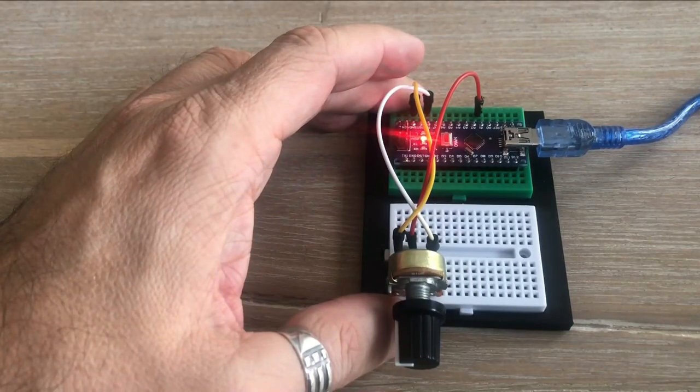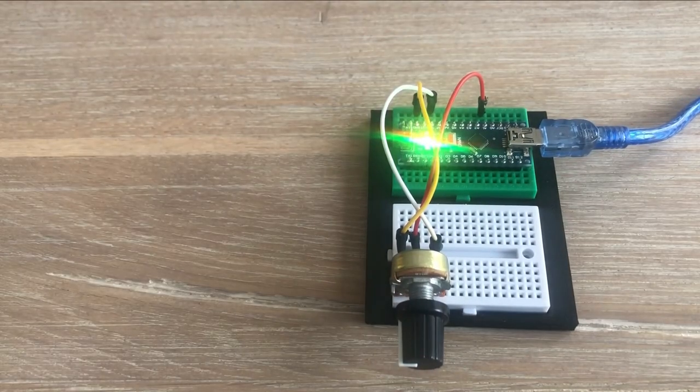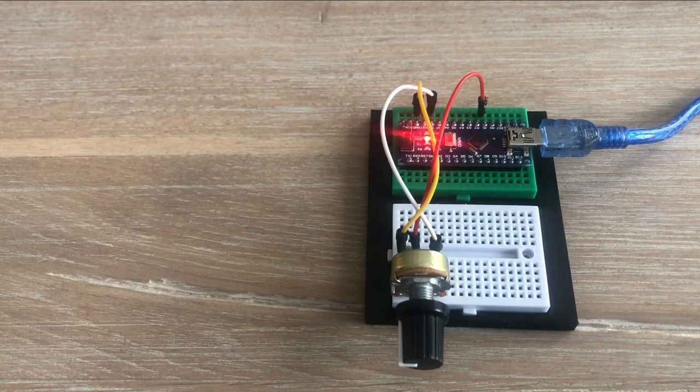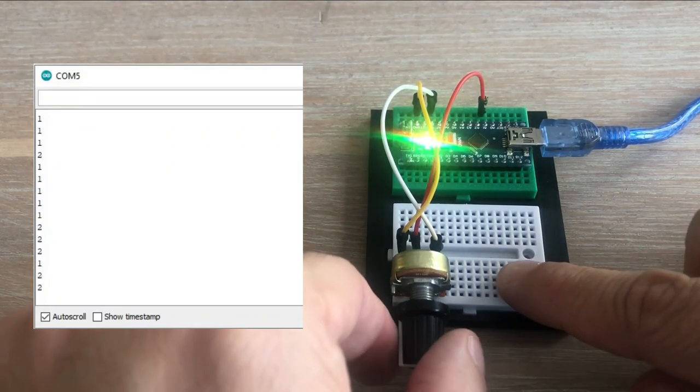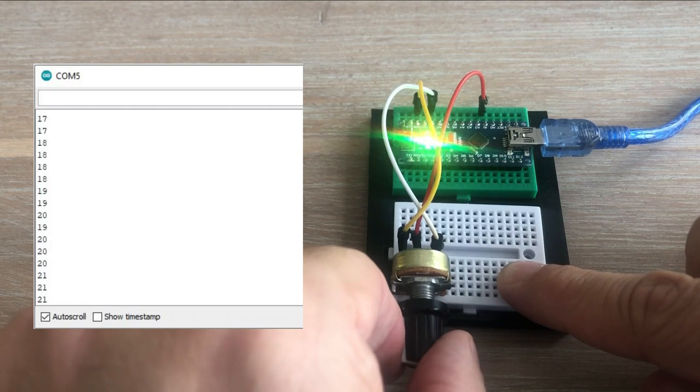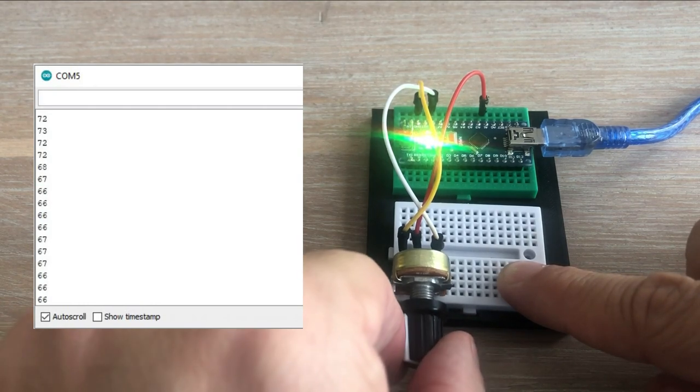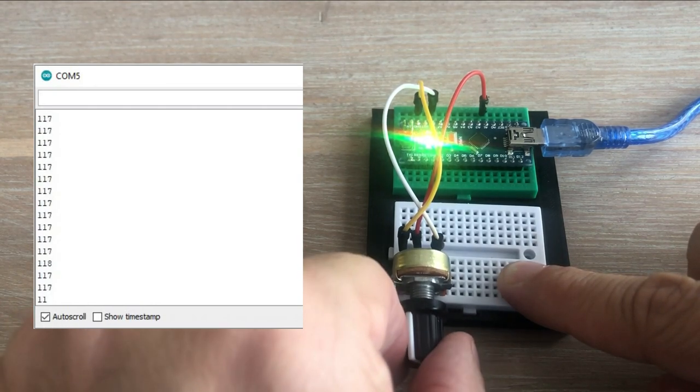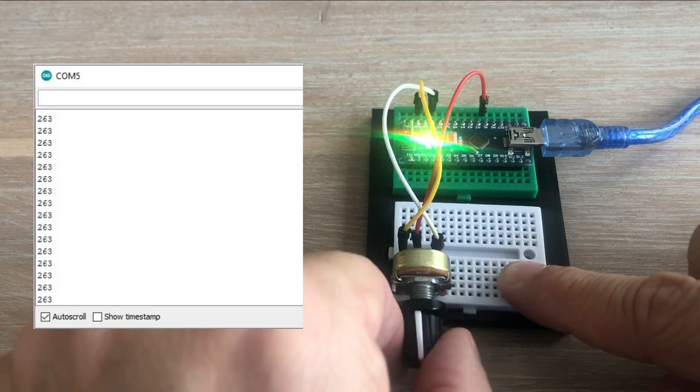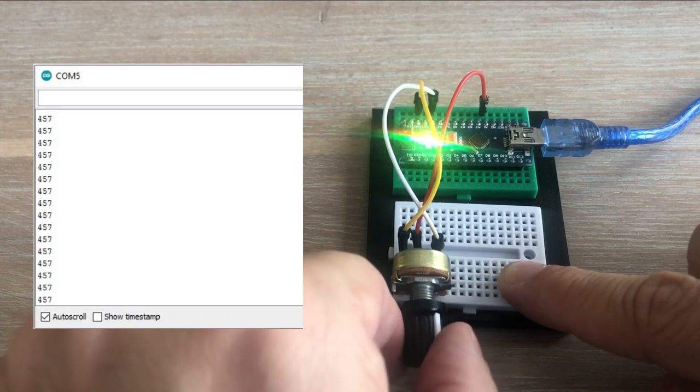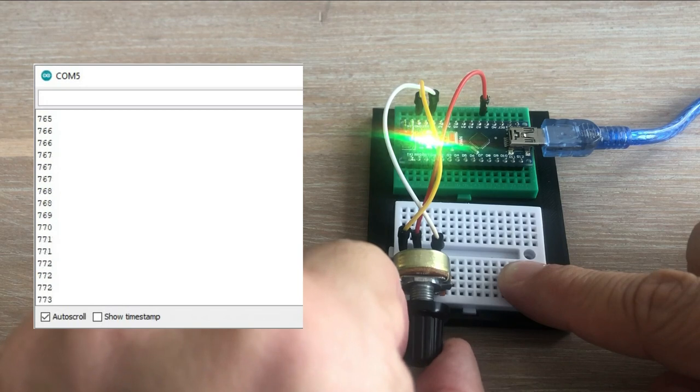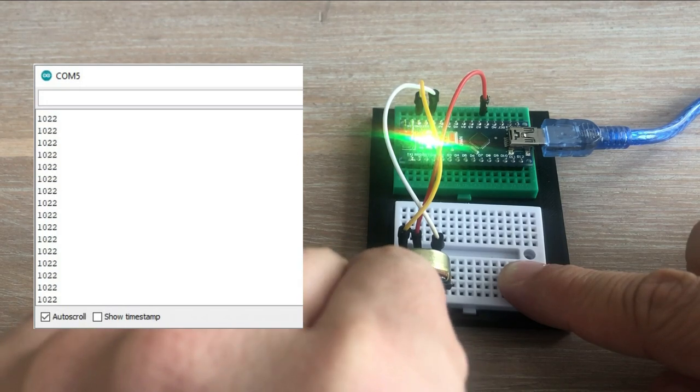Let's load the sketch to Arduino and observe the results. You can see the values produced by analogRead command displayed in serial monitor, but those values are not between 0 and 5. The actual range is from 0 to 1023 where 0 represents 0 volts and 1023 represents 5 volts.